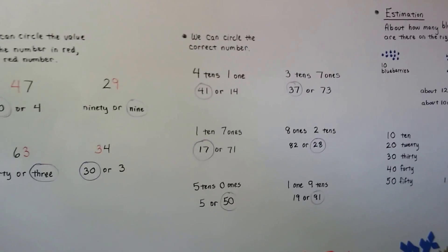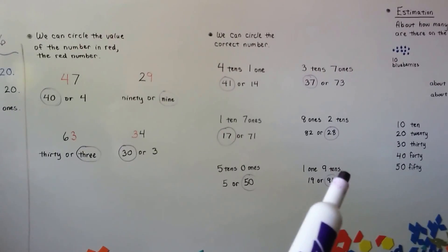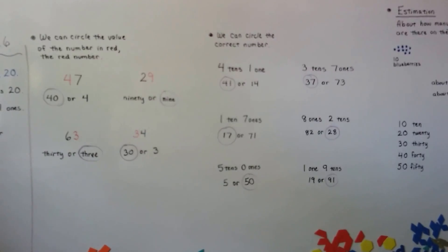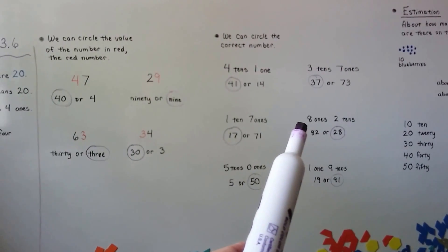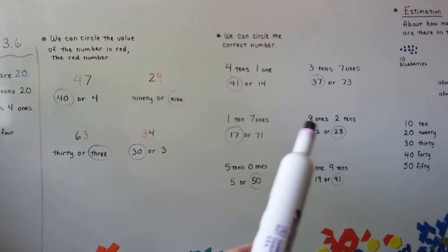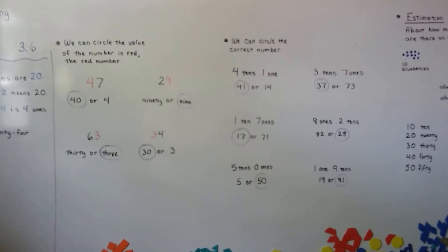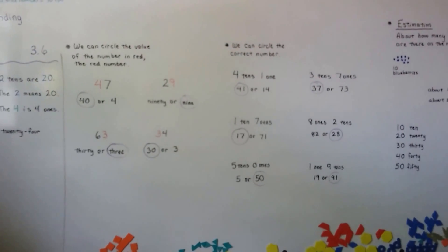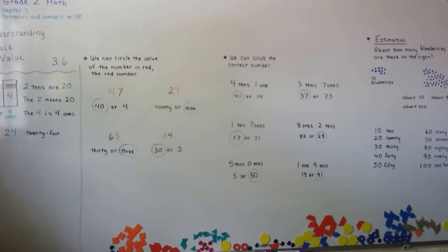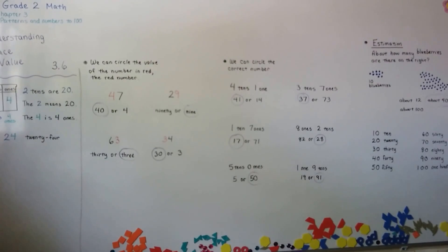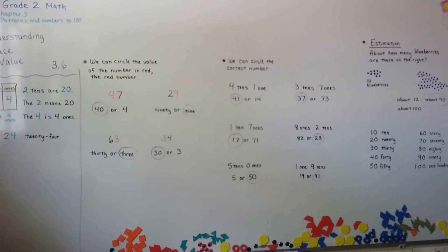That is understanding place value. It's very important that you pay attention to whether it says ones or tens and what order it's written in, because you might accidentally write an 82 instead of a 28 if they're not in the regular order. Remember: on the left is the tens and on the right is the ones. See you next video, bye!